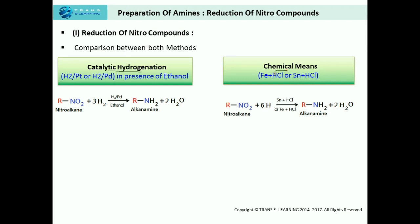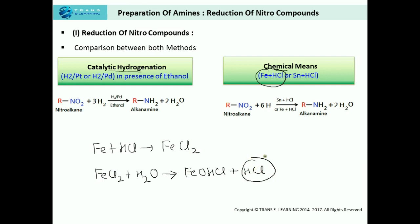Which method is better for converting nitro compounds into amines — catalytic hydrogenation or chemical means? The better method is using iron and hydrochloric acid. The reason is that Fe + HCl produces iron chloride, which gets hydrolyzed to release HCl during the reaction. Thus only a small amount of HCl is required to initiate the reaction, and the HCl produced within the reaction is recycled, making iron and HCl the preferred method.